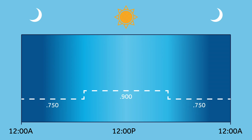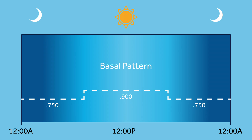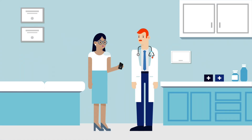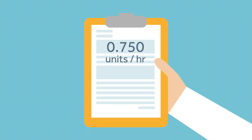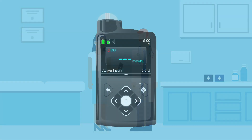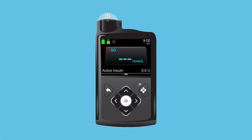The insulin needed to cover all 24 hours of the day and night is called a basal pattern. When Tina first started on her pump, her doctor determined that she should have a basal pattern with only one basal rate of 0.75 units per hour. Tina programmed this basal rate in her pump. Let's see how this is done.